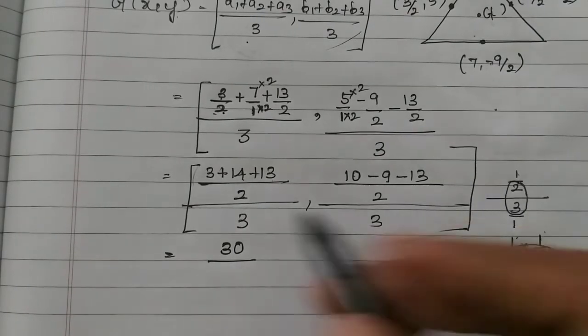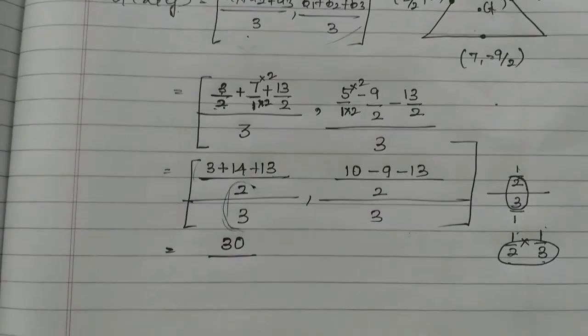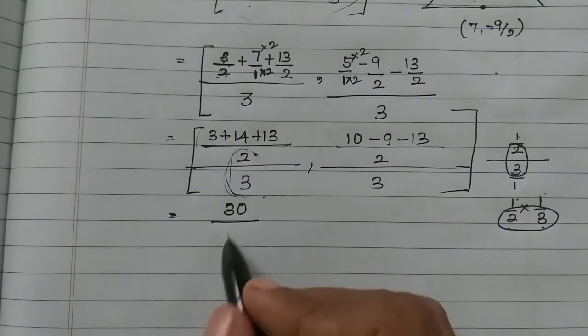The denominator is 2 numbers. So 2 into 3 is 6.